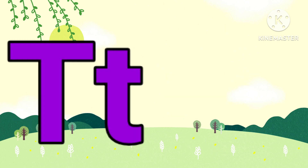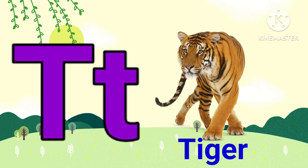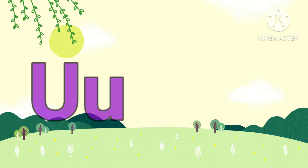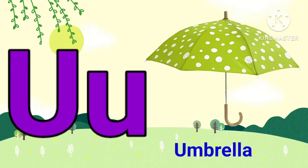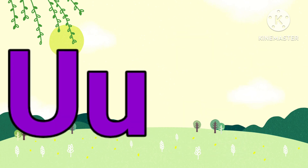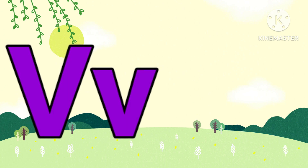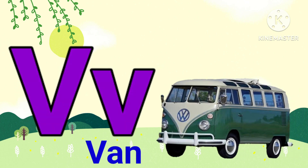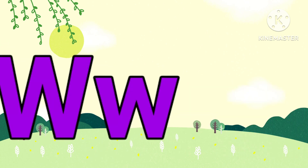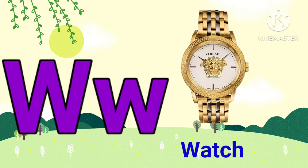T for tiger. U for umbrella. V for fan. W for watch.